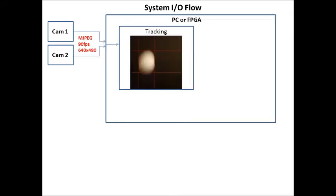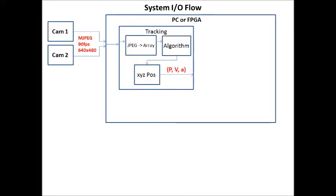First of all, we need to talk about how the data flows through our system. The top and bottom cameras acquire images. Those images are sent to the tracking system. The tracking system then takes the JPEGs, turns them into arrays, and then we have our algorithm find where the ball is.